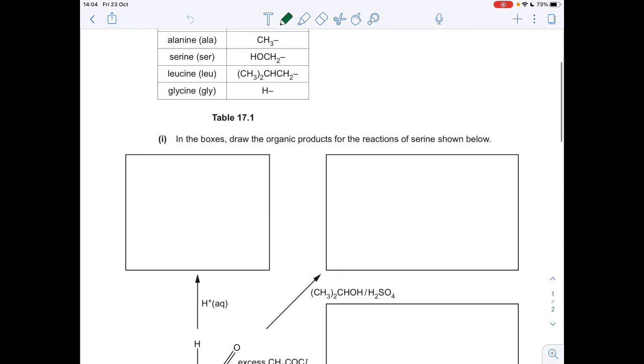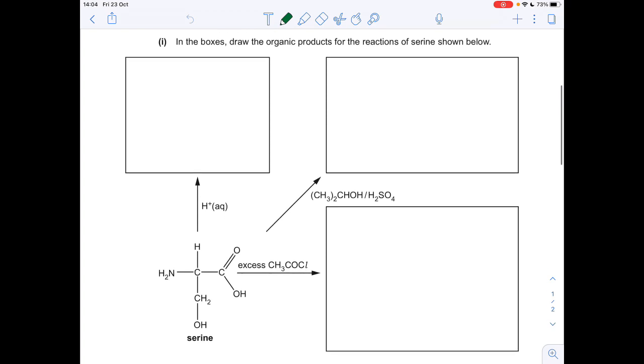So part A, the first thing we've got to do is in the boxes draw the organic products for the reaction of serine. They've given us serine there and it's reacting with three different things: H plus, an alcohol and some sulfuric acid, and an excess of an acyl chloride, that's ethanoyl chloride going horizontally there.